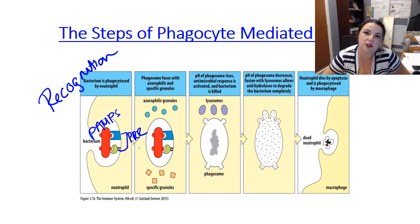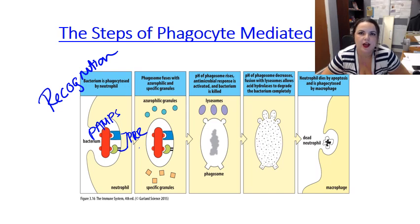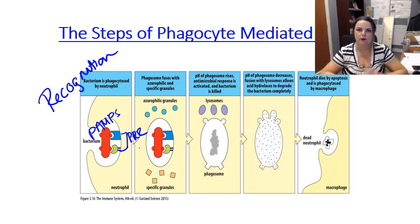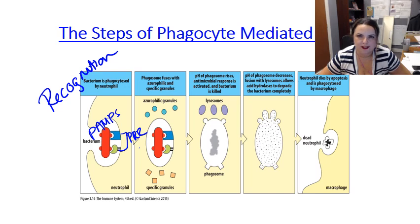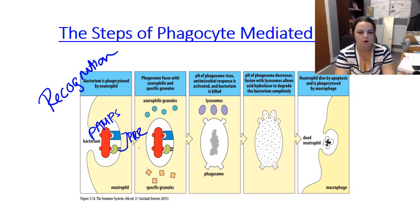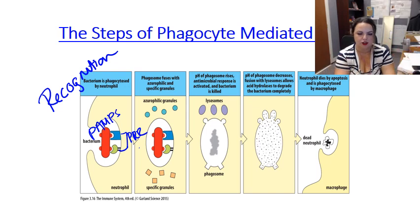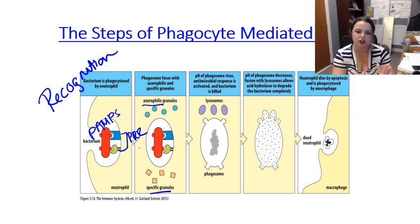Opsonization is easy eating — the equivalent of eating with a fork and knife instead of your hands. Once the phagocyte identifies its target, it takes it in and forms the phagosome. Then two sets of granules attack the pathogen: the azurophilic (primary) granules and the specific and tertiary granules.